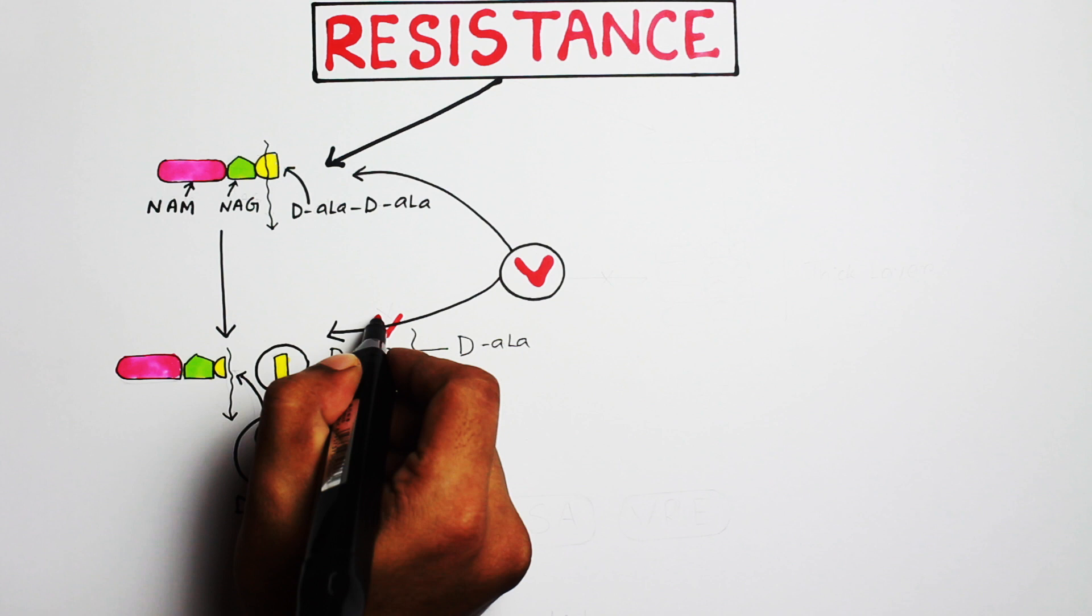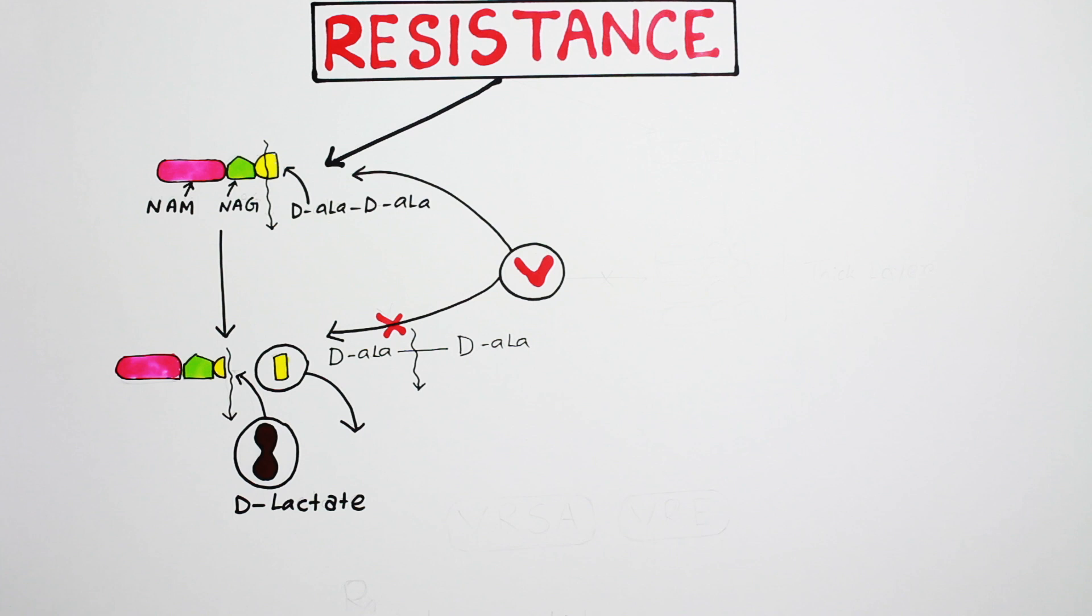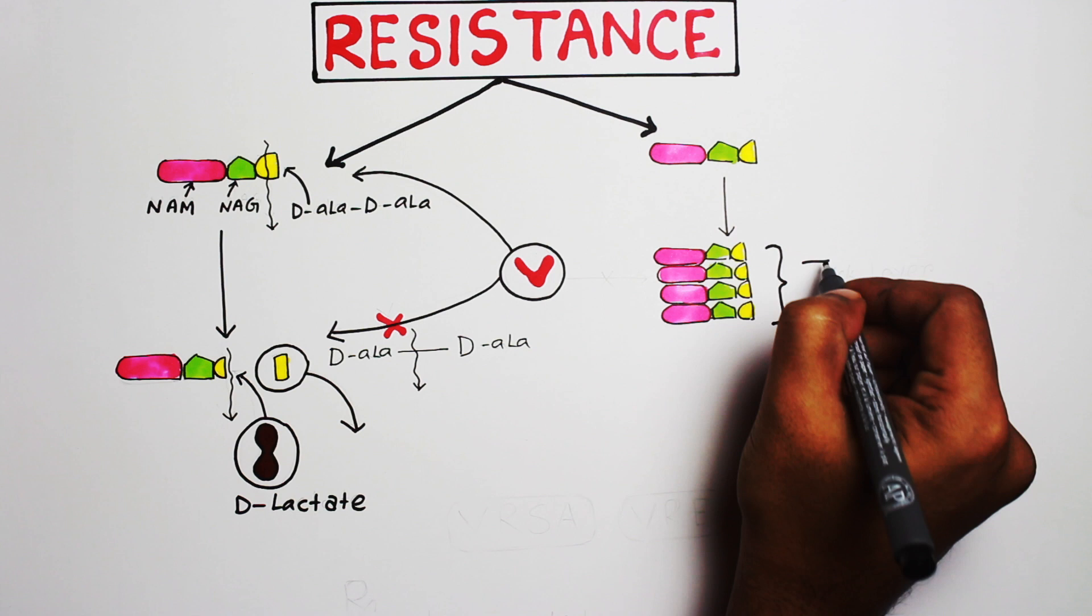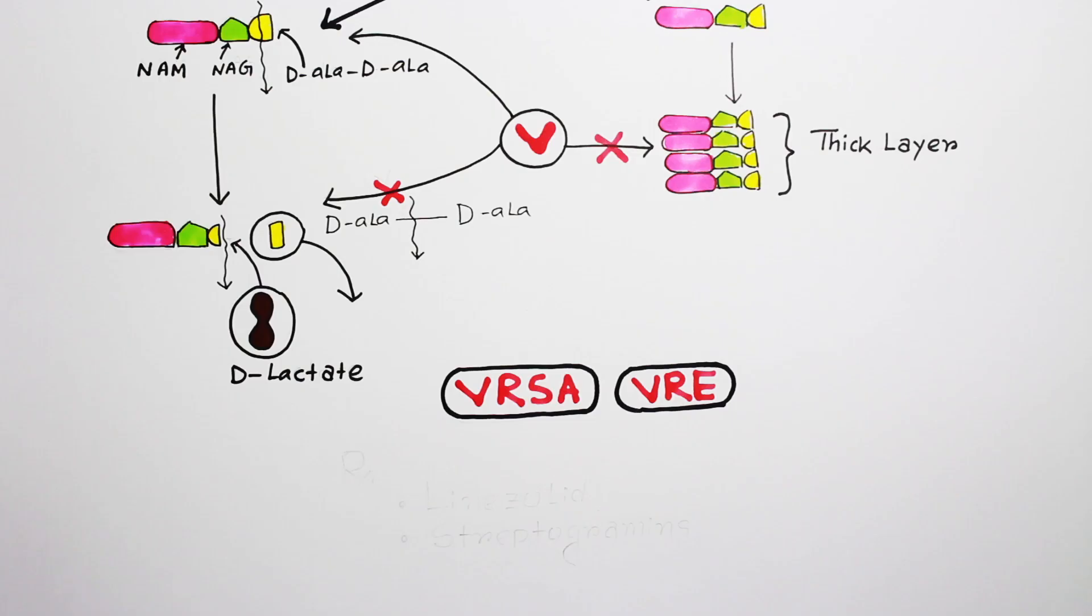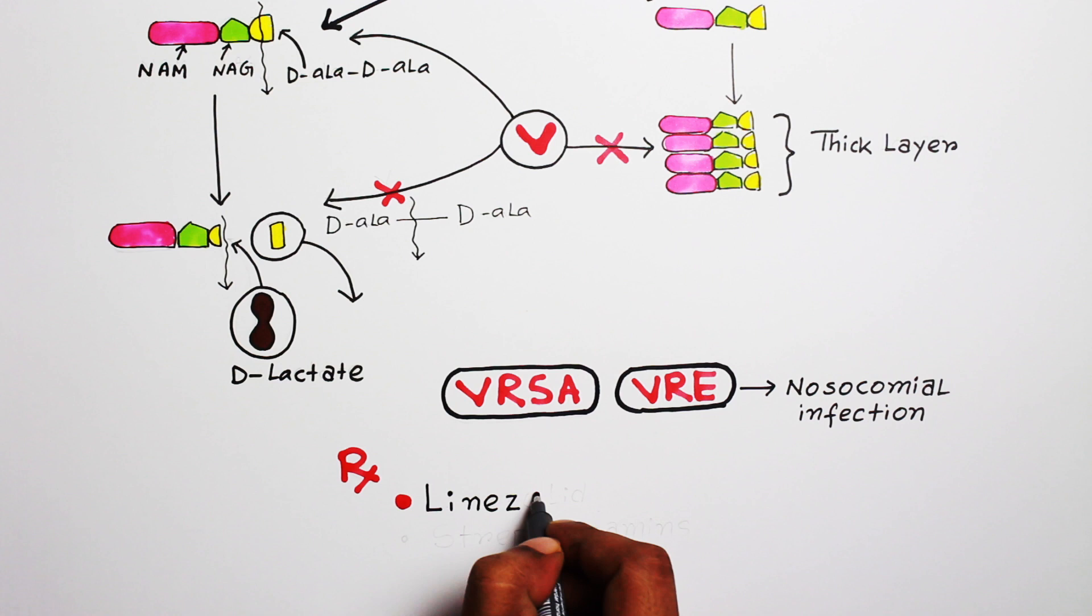Some Staphylococci and Enterococci bacteria do the exact same thing and acquire resistance against vancomycin. Another mechanism is bacteria can alter cellular metabolism and produce more and more cellular materials which eventually produce a thick cellular barrier, so vancomycin is unable to reach the site of action. Those dangerous bacteria are commonly known as VRSA or vancomycin-resistant Staphylococcus aureus and VRE or vancomycin-resistant Enterococci. They are responsible for serious nosocomial or hospital-acquired infection. In this situation we can give linezolid or streptogramins.